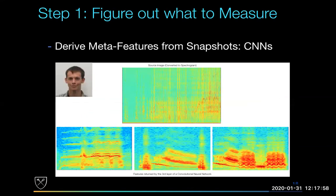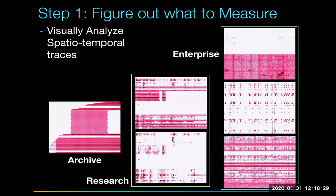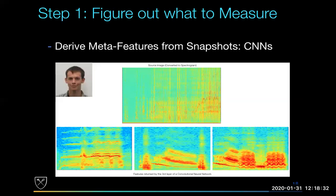We have one project where we're trying to understand what features are present without knowing anything about the data at all — done at the block level. We're trying to understand what higher-dimensional features exist between different datasets. The axes shown are space and time: a spatial dimension (LBA) and a time dimension.